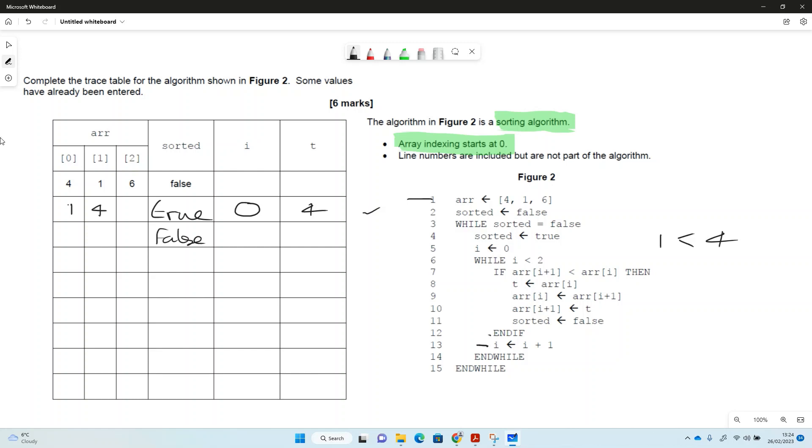We've got our end if, then i gets i+1, so i comes up to 1. Then we've got our end while, so these lines here connect to each other. We go back up, while i is less than 2, it is less than 2, but remember i is now 1. So if array[i+1], that's 6, so if 6 is less than array[i], and that's 4 now because we moved it just there. Well, 6 is not less than 4, so we're not going to do any of this if statement, we're just going to say i equals i+1.